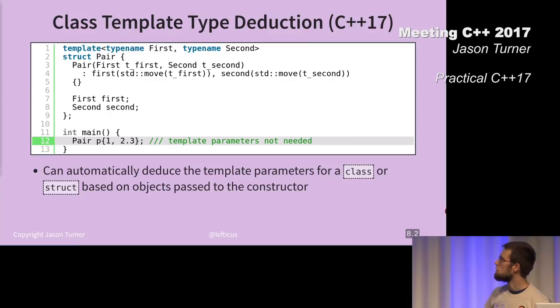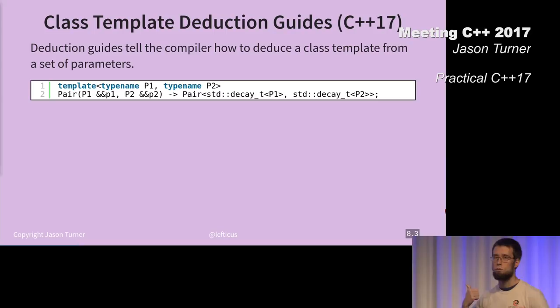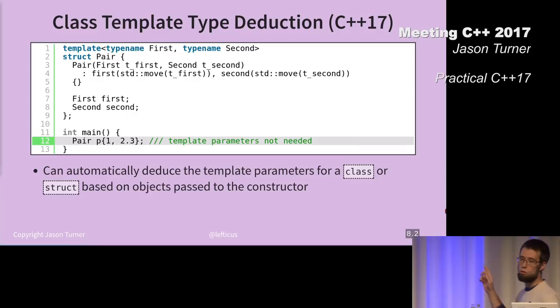C++17, to make this work, also had to add something called template deduction guides. This is the general form of a deduction guide. The point is, with a regular class template, it can only deduce the types of the template type parameters if it can get that from the parameters that are passed to the constructor.